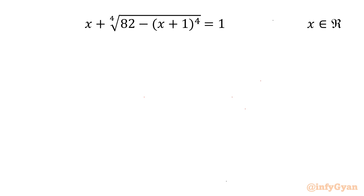Welcome back to Infigyan, my dear friends. In this video we are going to take up one very interesting question from radical equations. It is x plus the 4th root of (82 minus (x+1)^4) equal to 1. We have to find out all real solutions.